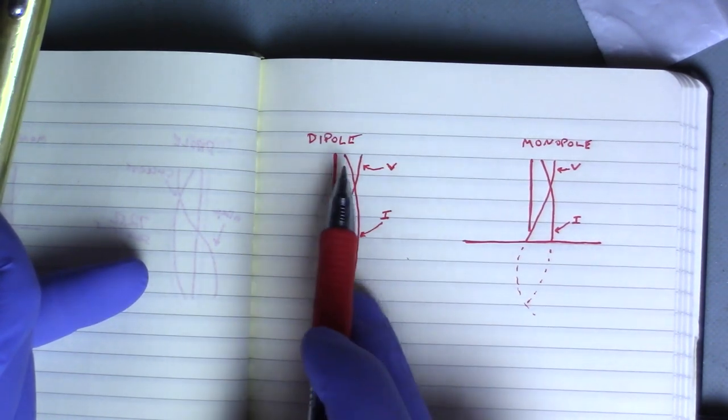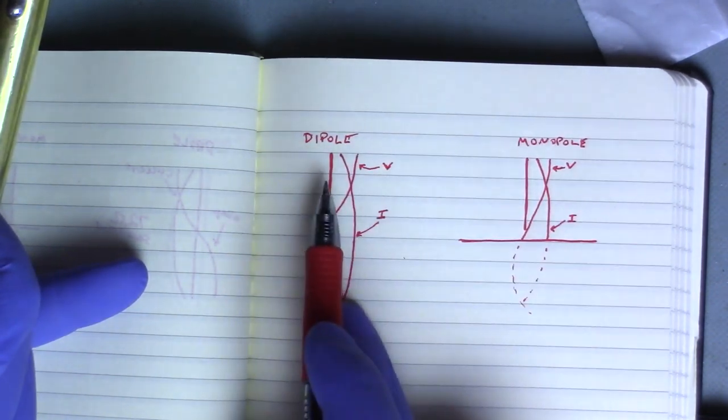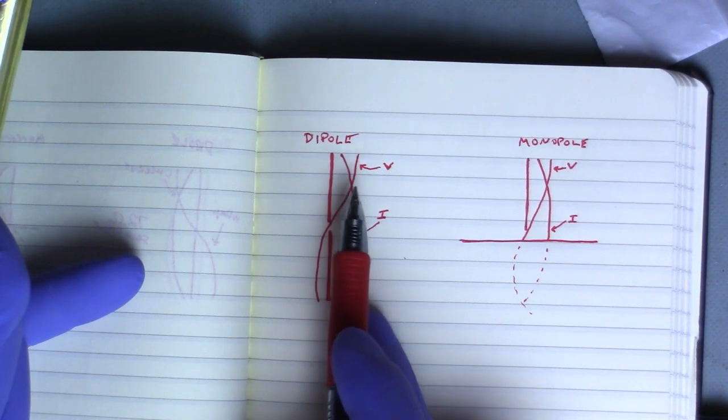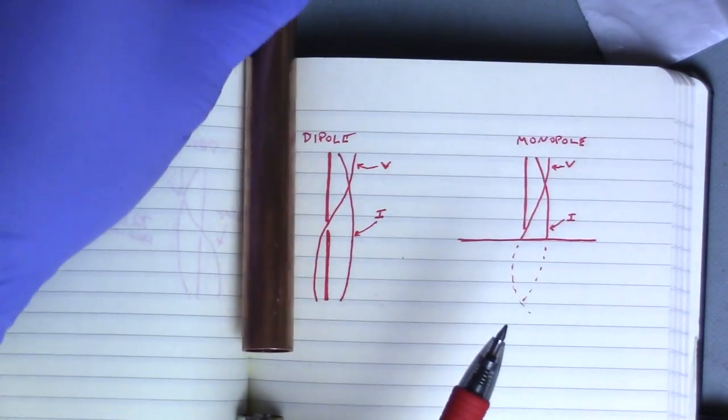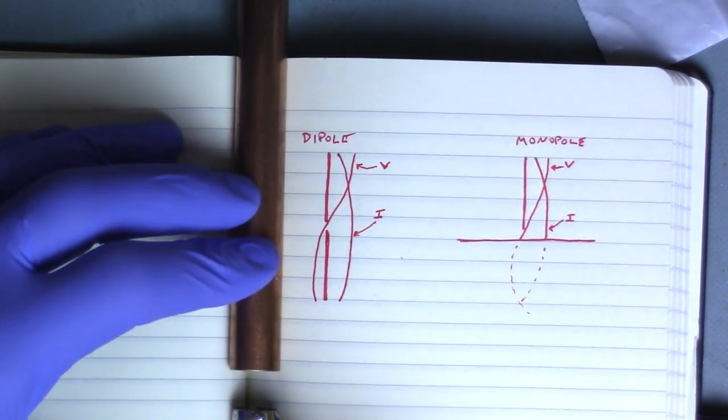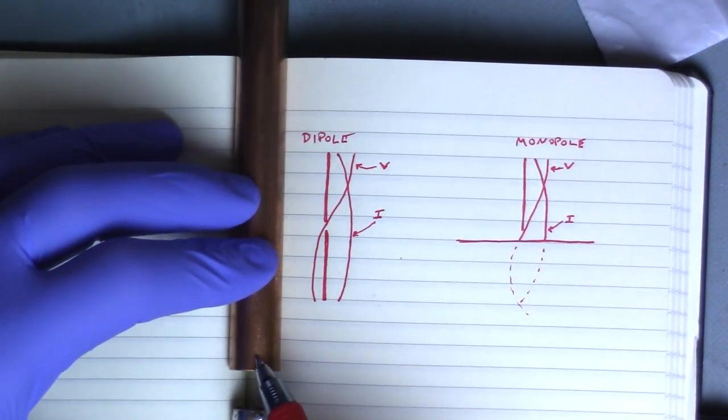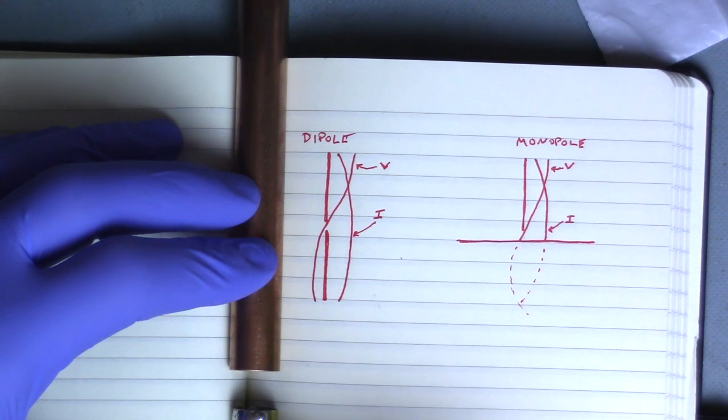So electrically we're going to look at a dipole and a monopole. A dipole is pretty much one of the simplest antennas that you can make. They're basically just two conductors, separated electrically at the center and you're feeding one side here with your transmission line and the other side with the other end of your transmission line.